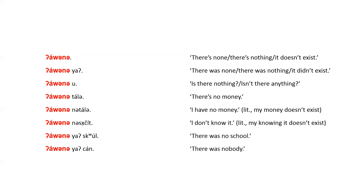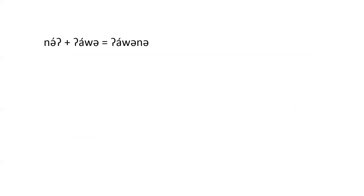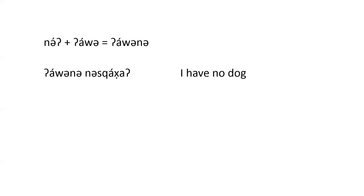The word 'ne' in Klallam means exist, come into existence, be born, or be someone. When this combines with 'awa,' it forms a special compound 'awana,' which means nothing, none, or not exist. It's really a verb meaning to be nothing or to not exist. It's possible to say 'awana' meaning you don't exist or you're nothing. When the word following 'awana' has a possessive pronoun on it, the translation often includes 'have no,' as in 'awana neskaha' — I have no dog.